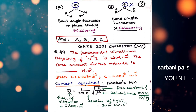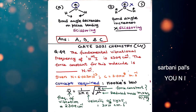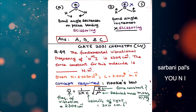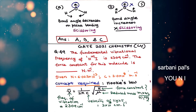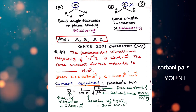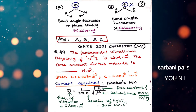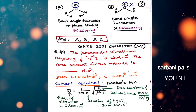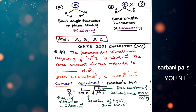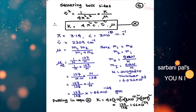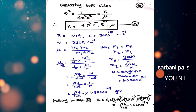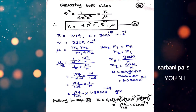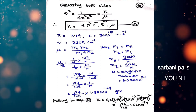To calculate the force constant, we use Hooke's law: ν̄ = (1/2πc) √(k/μ), where ν̄ is the vibrational frequency in cm⁻¹ (2309 cm⁻¹ here), c is the velocity of light (3 × 10¹⁰ cm/s), k is the force constant to be calculated, and μ is the reduced mass. The formula for reduced mass is μ = m₁m₂/(m₁ + m₂). Squaring both sides of Hooke's law gives k = 4π²c²ν̄²μ.